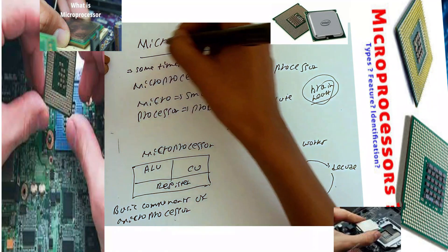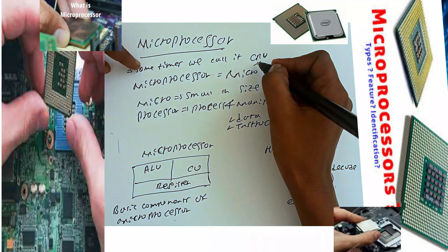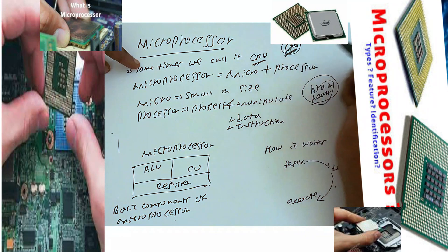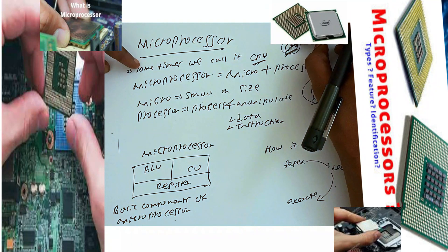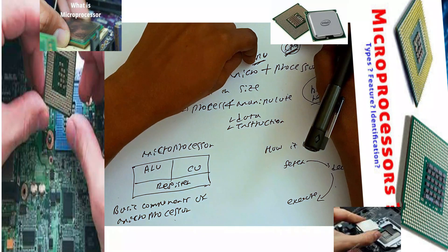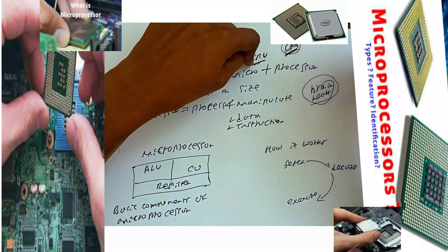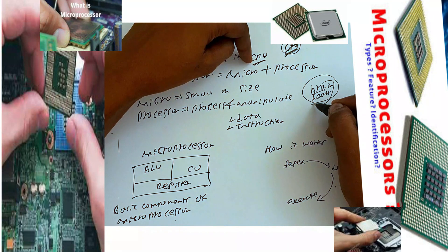A microprocessor or microcontroller, sometimes we call it CPU, or central processing unit. Most scientists say that it is the brain of the computer and the heart of the computer.